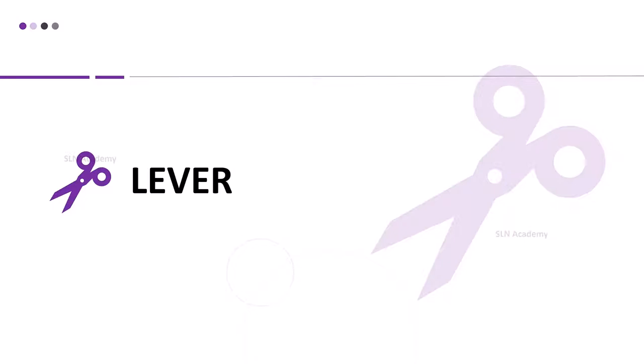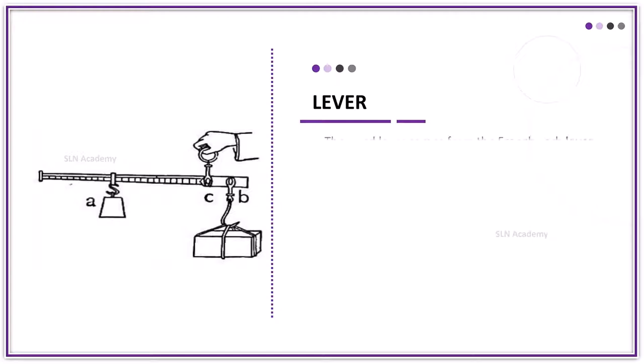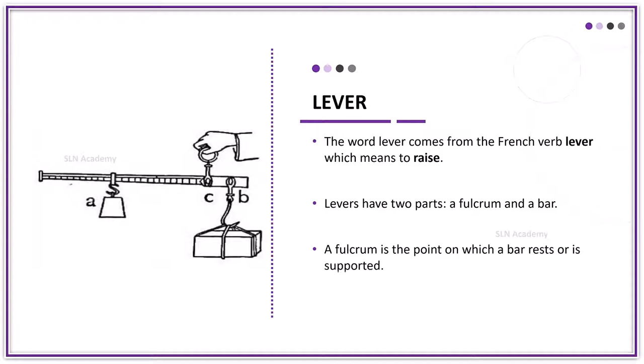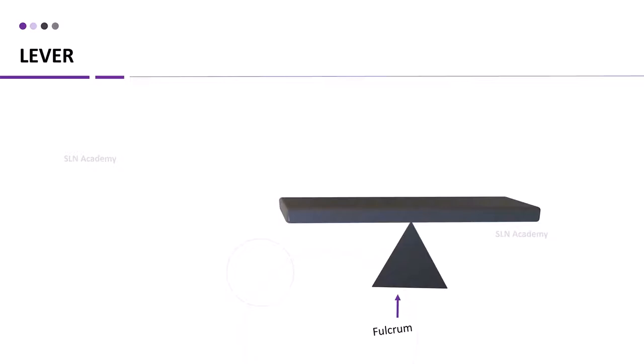Lever. Lever is a simple machine used to lift weight. It is a rod free to move about a fixed point. The word lever comes from the French word lever which means to raise. Levers have two parts: a fulcrum and a bar. Fulcrum is the point on which a bar is supported.